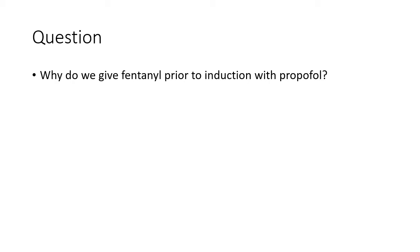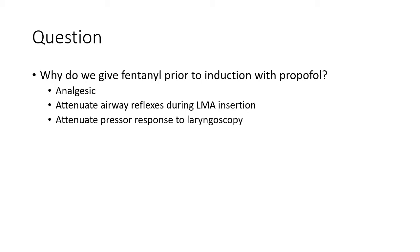I want to flesh out one of these terms in particular. The question I would like you to ask yourself is: why do we give fentanyl prior to induction with propofol? An anaesthesia novice might correctly state that fentanyl is an analgesic, and this is useful during the anaesthetic itself. Somebody who knows a bit more might be able to tell you that if you are inserting an LMA, then fentanyl functions to ablate the airway reflexes, and that if you are paralysing and intubating the patient, then it serves to reduce the pressor response to laryngoscopy. Each of those things is true, but an important answer that is often omitted is that these drugs have synergistic interactions. We can obtain airway reflex ablation and keep the patient still using propofol alone — it's just that we will need to administer a whole lot more of it.